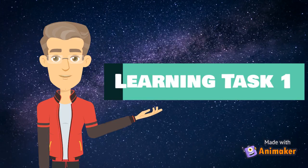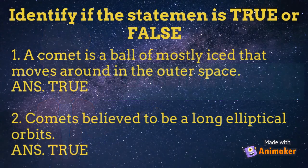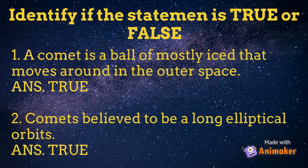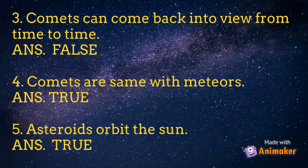Learning Task Number 1: Identify if the statement is true or false. Number 1: A comet is a ball of mostly ice that moves around in outer space. Answer: True. Number 2: Comets are believed to have long elliptical orbits. Answer: True. Number 3: Comets can come back into view from time to time. Answer: False. Number 4: Comets are the same as meteoroids. Answer: True. Number 5: Asteroids orbit the sun. Answer: True.